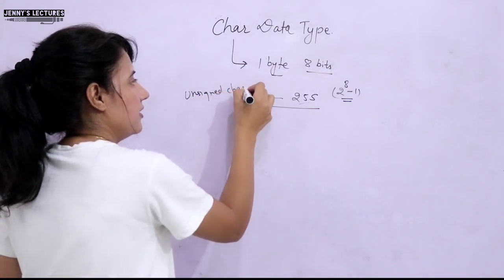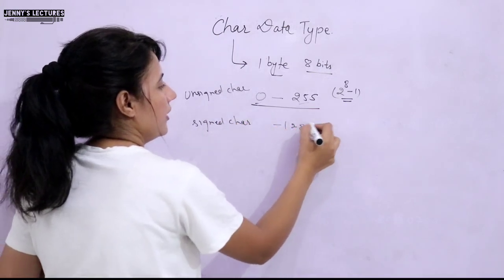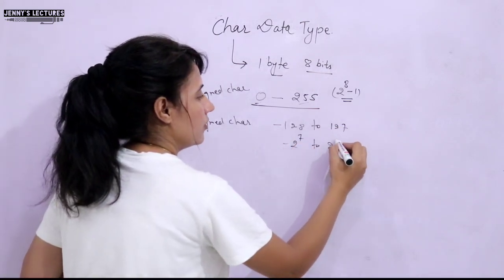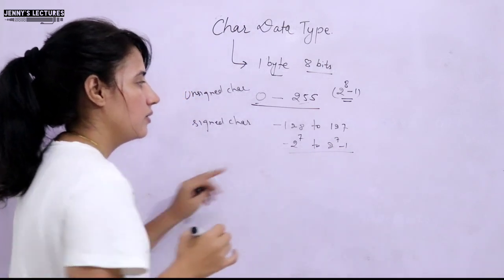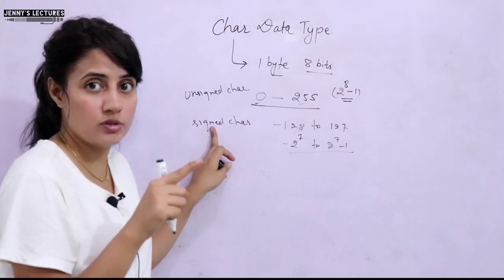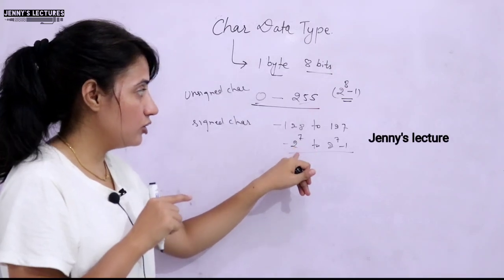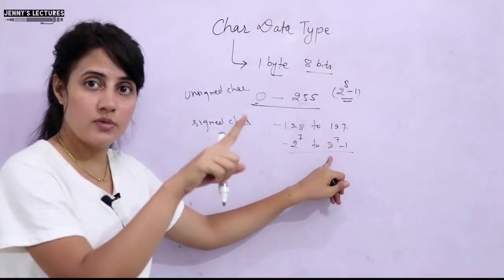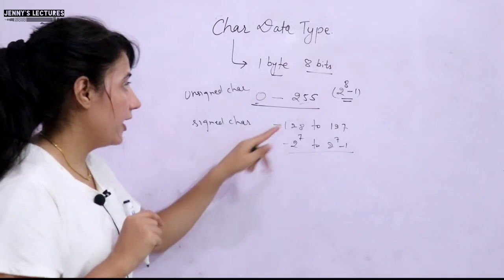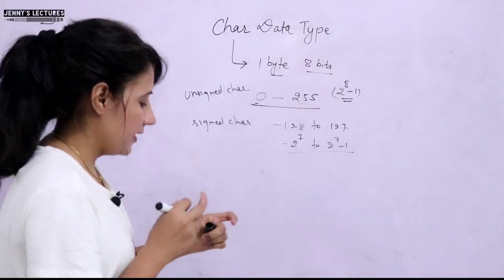For signed char, the range is minus 128 to 127 — that is, minus 2 raised to power 7 to 2 raised to power 7 minus 1. One bit is used for the sign (the MSB, whether positive or negative), and the remaining 7 bits store the number. This is the same logic we applied when discussing the int data type range.